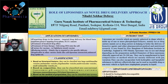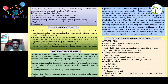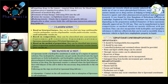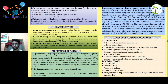Liposomes can be classified mainly into three types. Based on structural features, we can classify them as multilamellar, unilamellar, oligolamellar, etc. Based on composition, we can classify them as pH-sensitive, cationic, conventional, etc. For preparation purposes, we classify them by methods such as extrusion, reverse phase evaporation, ether injection, and thin-film hydration.